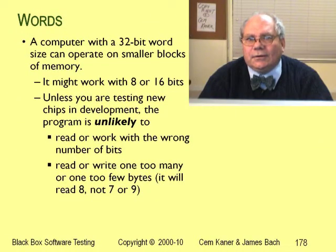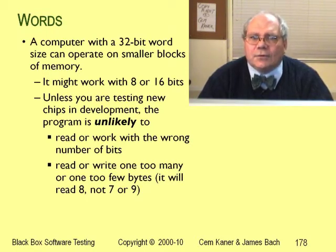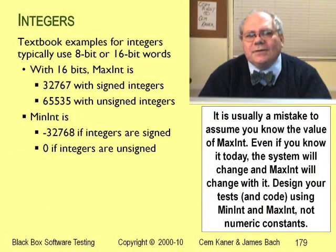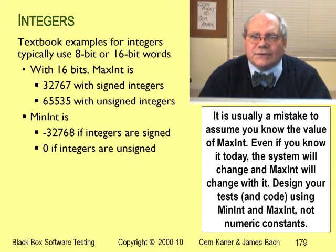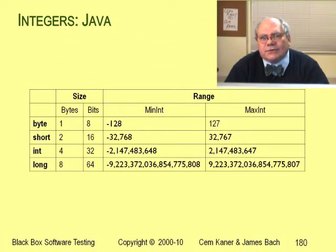The size of an integer — that is, the number of significant digits in an integer — is often determined by the programming language rather than by the computer chip. This makes it possible for us to run the same program with the same precision of calculations on many different types of computers. So for any particular computer, what the programming language treats as an integer might span more or less than one computer word of memory. Because integers are given different amounts of storage space in different programming languages, we often talk about minint and maxint. Minint is the smallest value an integer can take on this system or in this language. Maxint is the largest value. Java supports four types of integers spanning 8-bits through 64-bits. I've also seen integers with 12-bits, 24-bits, 48-bits, and 128.